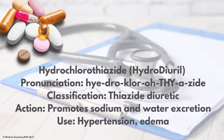HydroDIURIL — the generic is hydrochlorothiazide, also called HCTZ for short, which is what we typically document when charting. Classification: thiazide diuretic. Action: it promotes sodium and water excretion. Use: hypertension and edema.